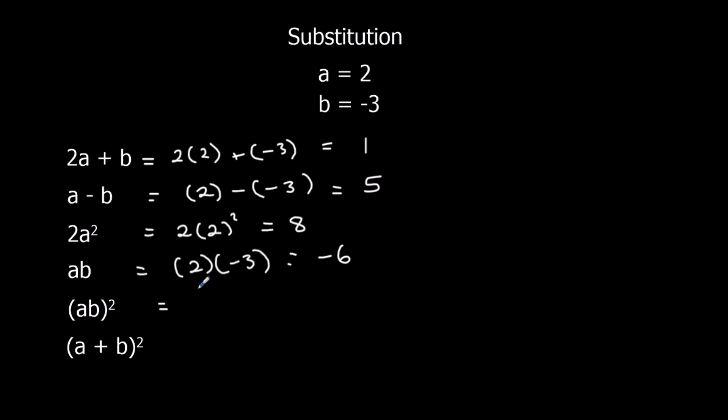AB squared. So it's A times B first, and then we're going to square it. 2 times minus 3, we've just done, that was minus 6. Minus 6 squared, 6 times 6 is 36. And A plus B squared, that's A plus B, and then squared after. 2 plus minus 3 means 2 minus 3, that's minus 1. Minus 1 squared, so minus 1 times minus 1, minus times minus makes a plus, so that's 1.